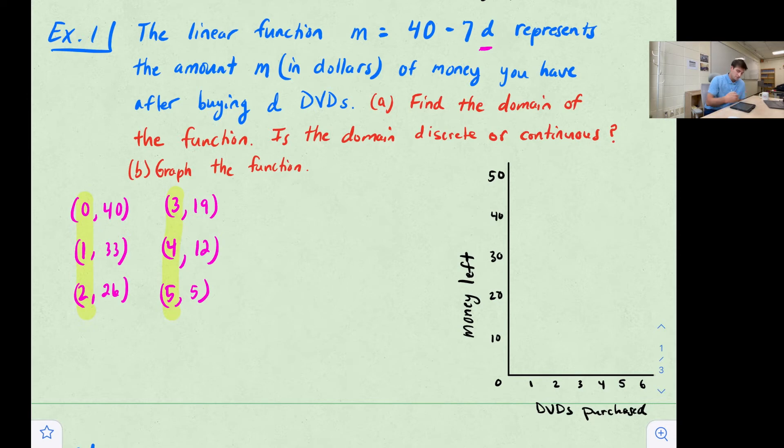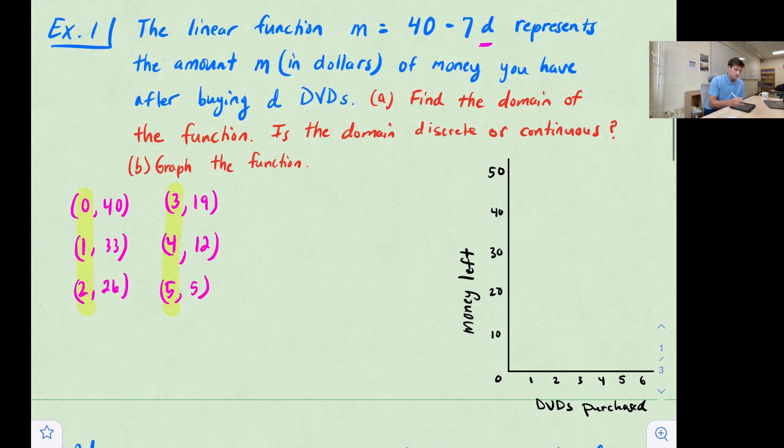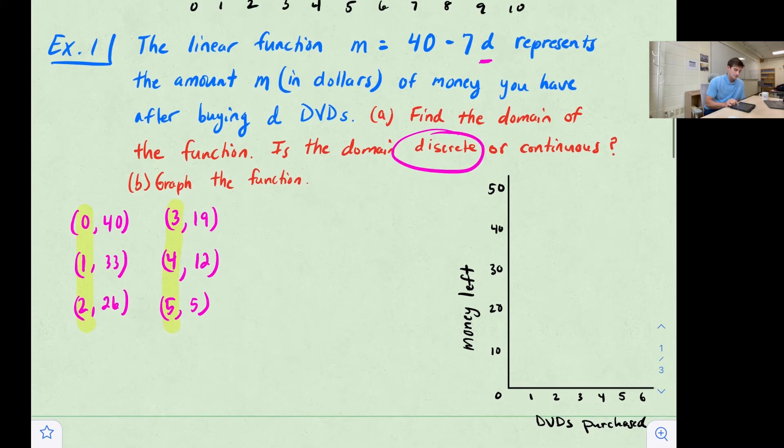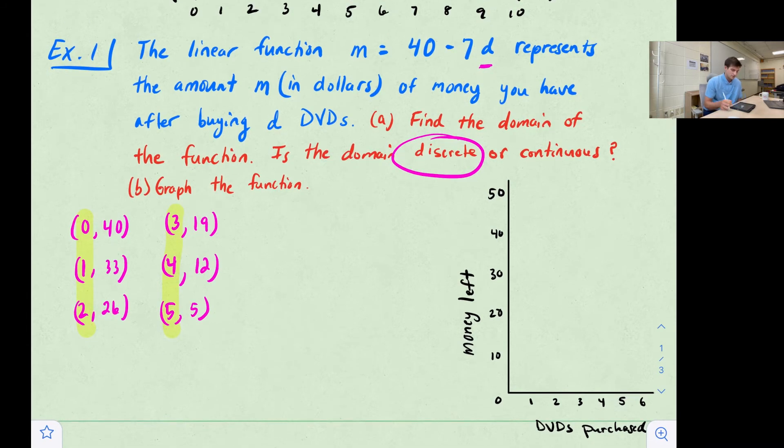So our range would be the Y values there. So they tell us, is the domain discrete or continuous? Well, we said we can't buy half a DVD. We can't buy fractional pieces of a DVD. So we're not going to include all numbers between 0 and 5, just 0, 1, 2, 3, 4, 5. So we will call this discrete. We're going to graph the function just with points, and we're not going to draw a line between the points, just points themselves.